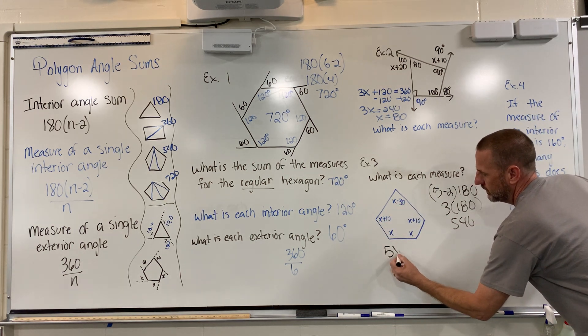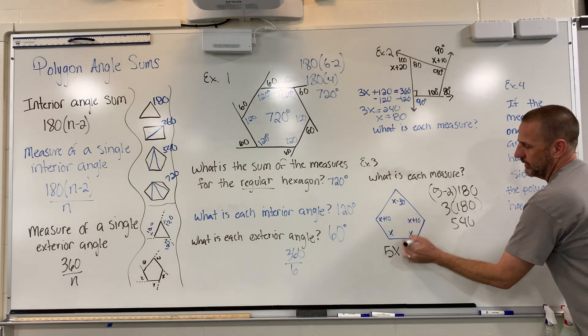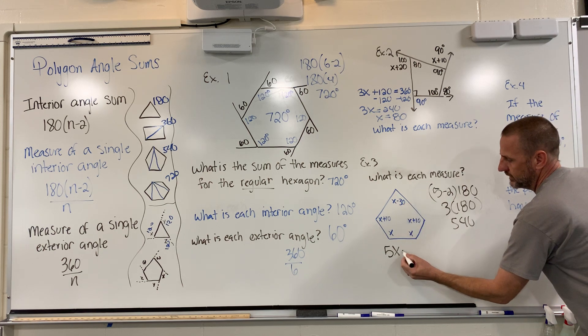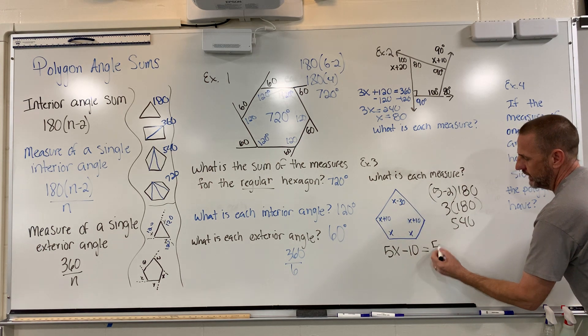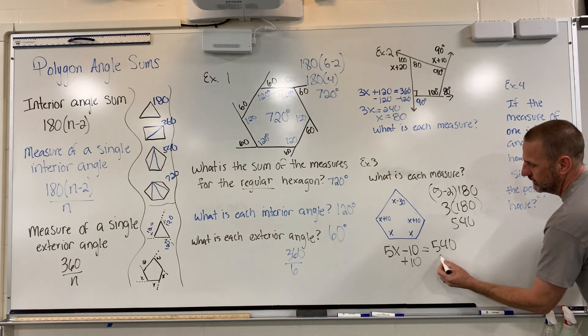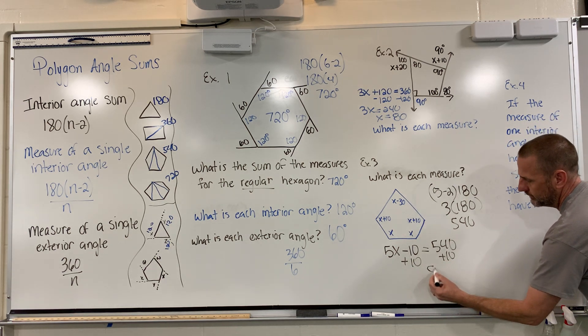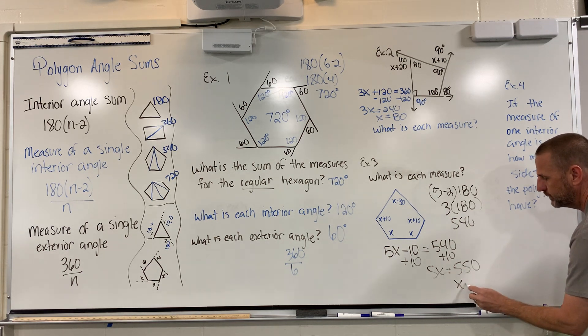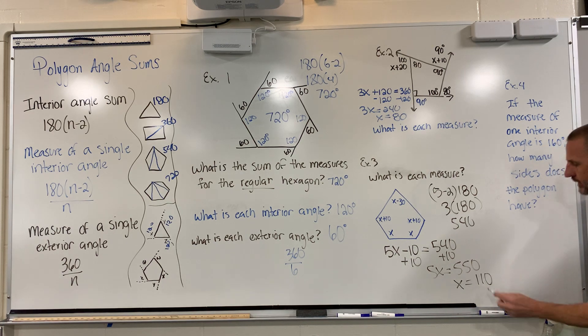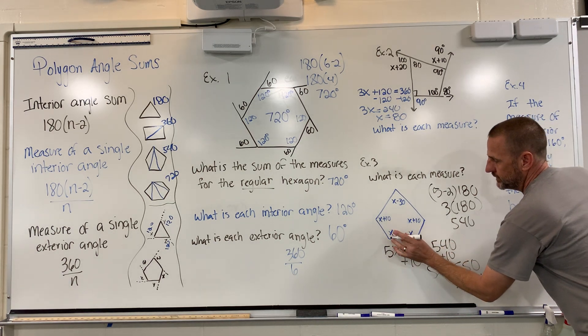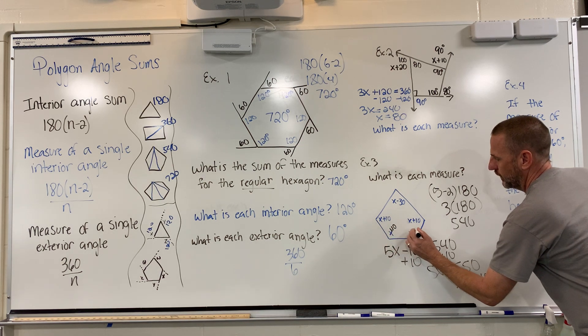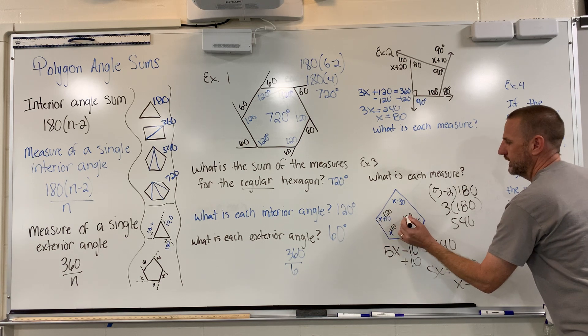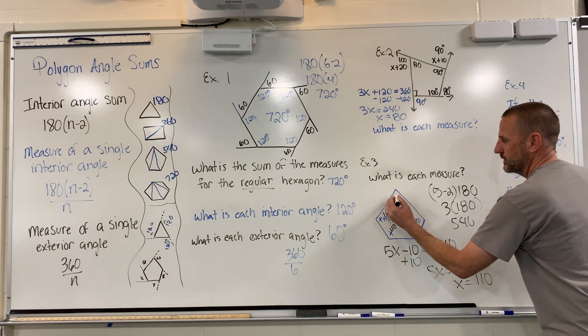By adding 10, I know that 5x equals 550, meaning x is going to be 110. So, I know that for this particular shape, this is 110, this is 110, this would be 120, 120, and then this one would be 110 minus 30, which is 80.